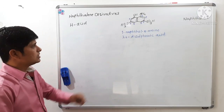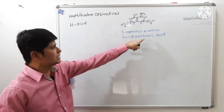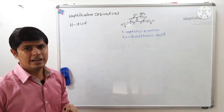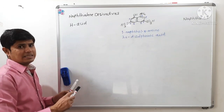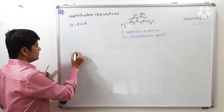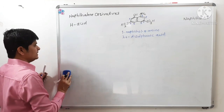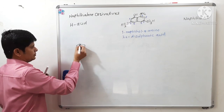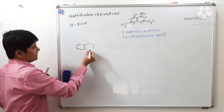So, this is 1-naphthol, 8-amino, 3,6-disulfonic acid, which is called H-acid. Now let us see how this H-acid can be synthesized. For the synthesis of H-acid, we have to start from naphthalene.